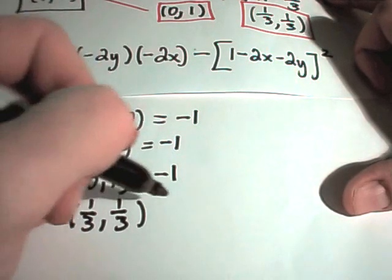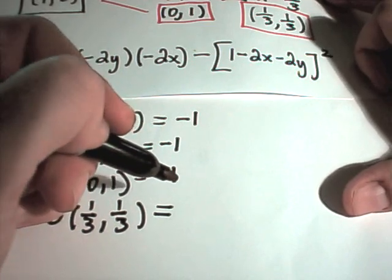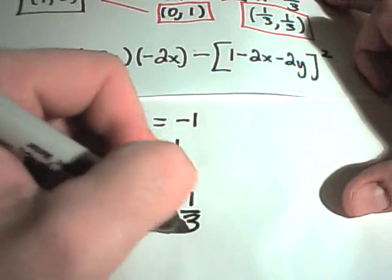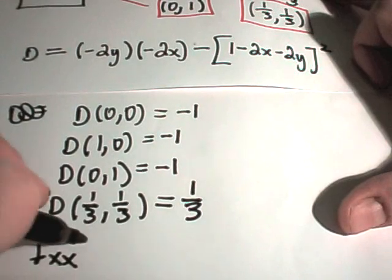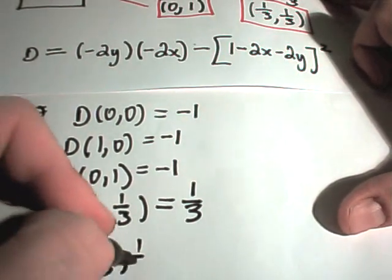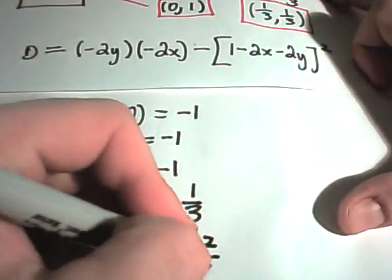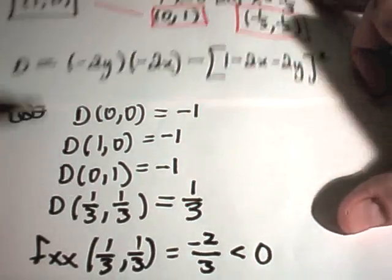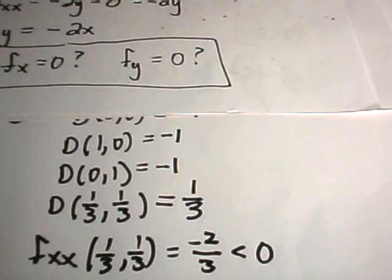Then if you plug in (1/3, 1/3), I got D to be 1 third, which is positive. So now we just need to check the second partial with respect to x at (1/3, 1/3). This turns out to be negative 2 thirds, which is less than zero. So that means at (1/3, 1/3), we actually have a local maximum. So here's one example — I'll do another in another video. I hope this helps, let me know if you have any questions.